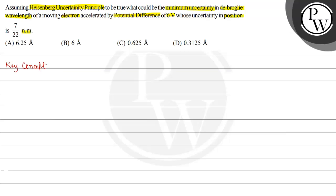There are multiple key concepts involved: Heisenberg's uncertainty principle and the de Broglie wavelength.